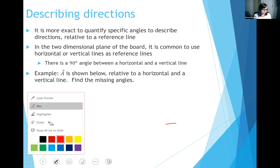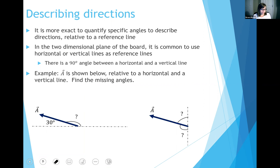Let's try to use that logic on a question. Vector A is shown in two different figures — it's relative to a horizontal line in one figure and relative to a vertical line in the other. Notice that vector A is the same in both; it has a certain length and a certain direction. We've just chosen to describe that direction two ways: once relative to a horizontal line, and once relative to a vertical line.